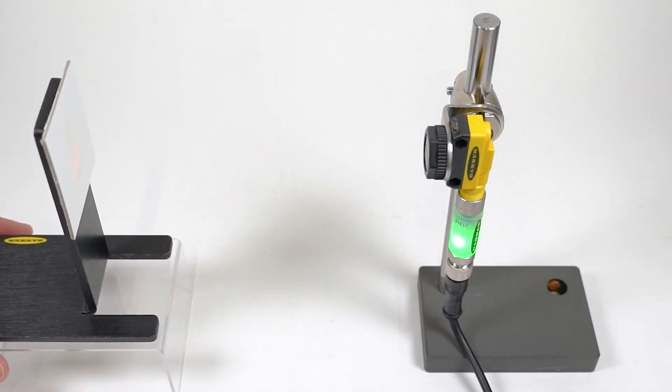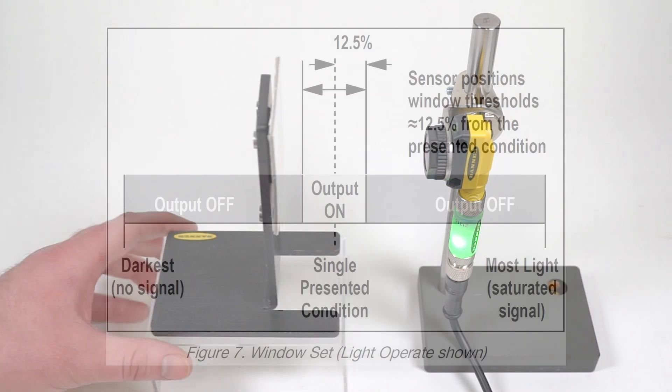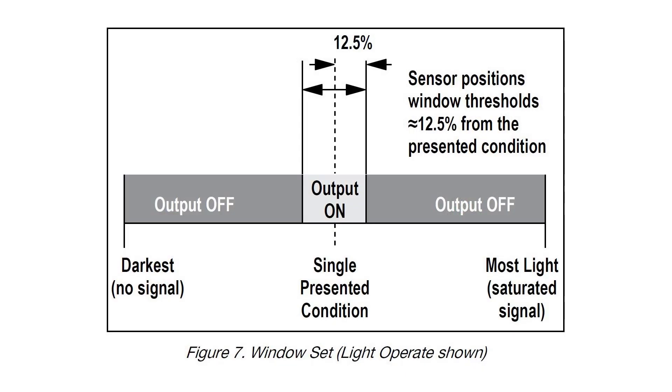The window set mode measures the light returning to the receiver and sets a window of switching thresholds 12.5% above and 12.5% below the taut condition.